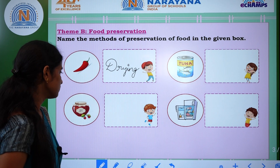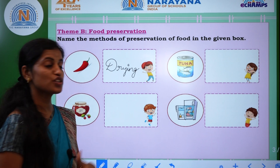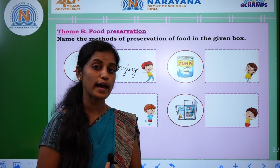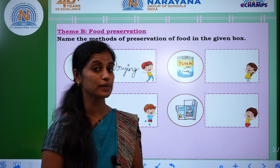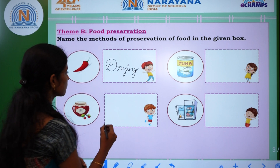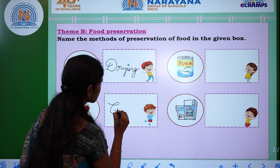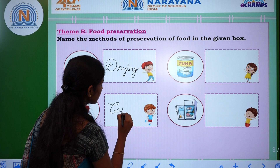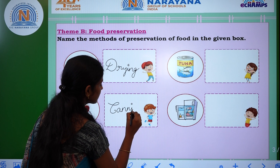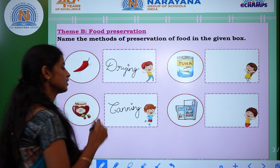The second one is jam. Preservation of jam is called canning. Already we learned this in the previous class. Canning — C-A-N-N-I-N-G. Canning.